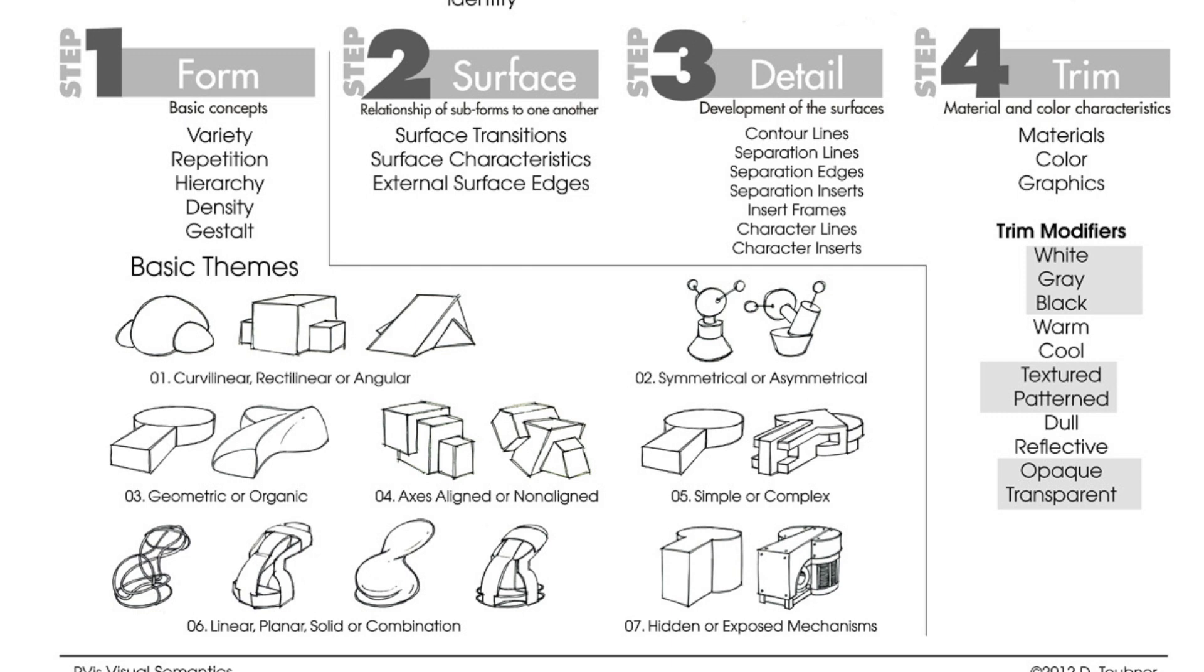Axis aligned or non-aligned, simple or complex, linear, planar, solid or a combination. Linear is if you're making something wiry. Hidden or exposed mechanics - if you look at anything with a more rugged feel like Samsung Active phones, you see a certain style. It's more bulky with more muscle and beef, but it also has exposed screws and mechanics which really shows off the parting lines.